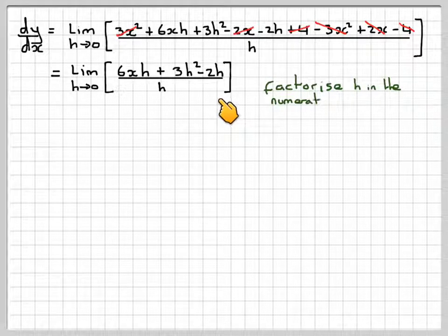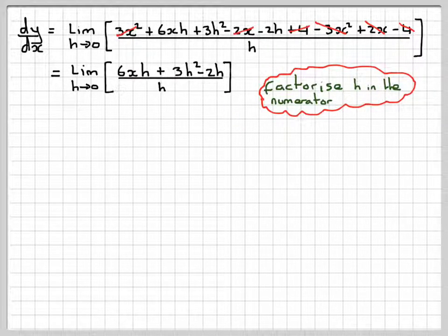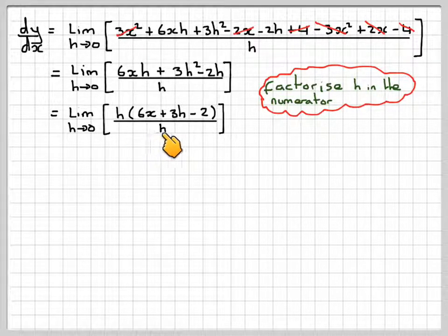We'll now factorize out an h at the top from the numerator. Doing that, we get the limit as h goes to 0 of h times 6x plus 3h minus 2, over h.